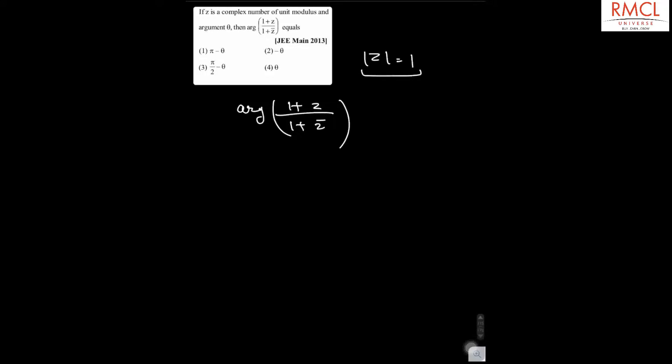If modulus of Z is equal to 1, and we know that Z multiplied by Z̄ is equal to |Z|², that will be equal to 1. Therefore, Z̄ will be equal to 1/Z.